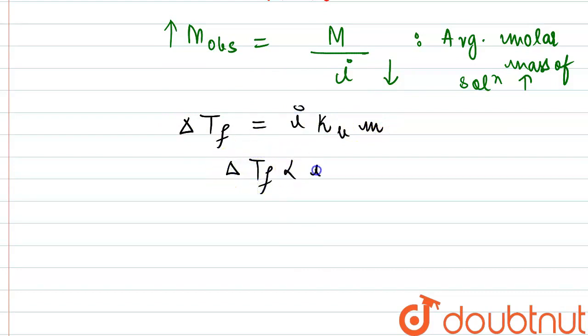So we can say that depression in freezing point is directly proportional to i. Similarly, if we talk about the elevation in boiling point, that is also directly proportional to the van't Hoff factor. This elevation is also directly proportional.